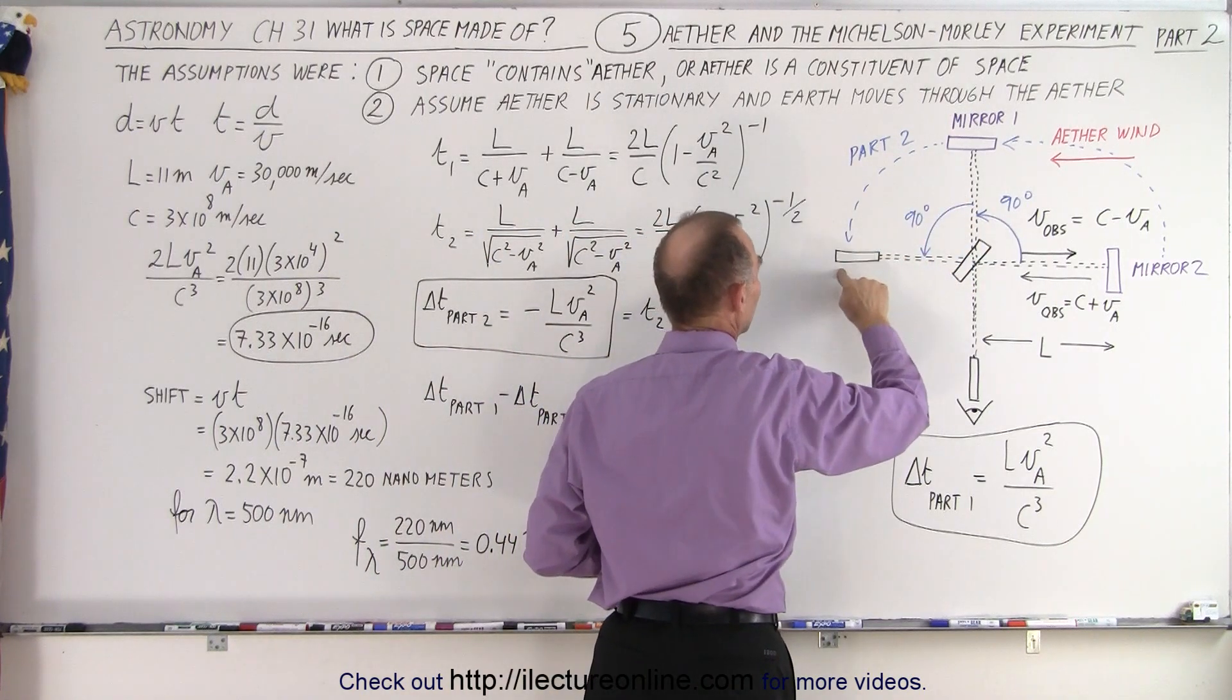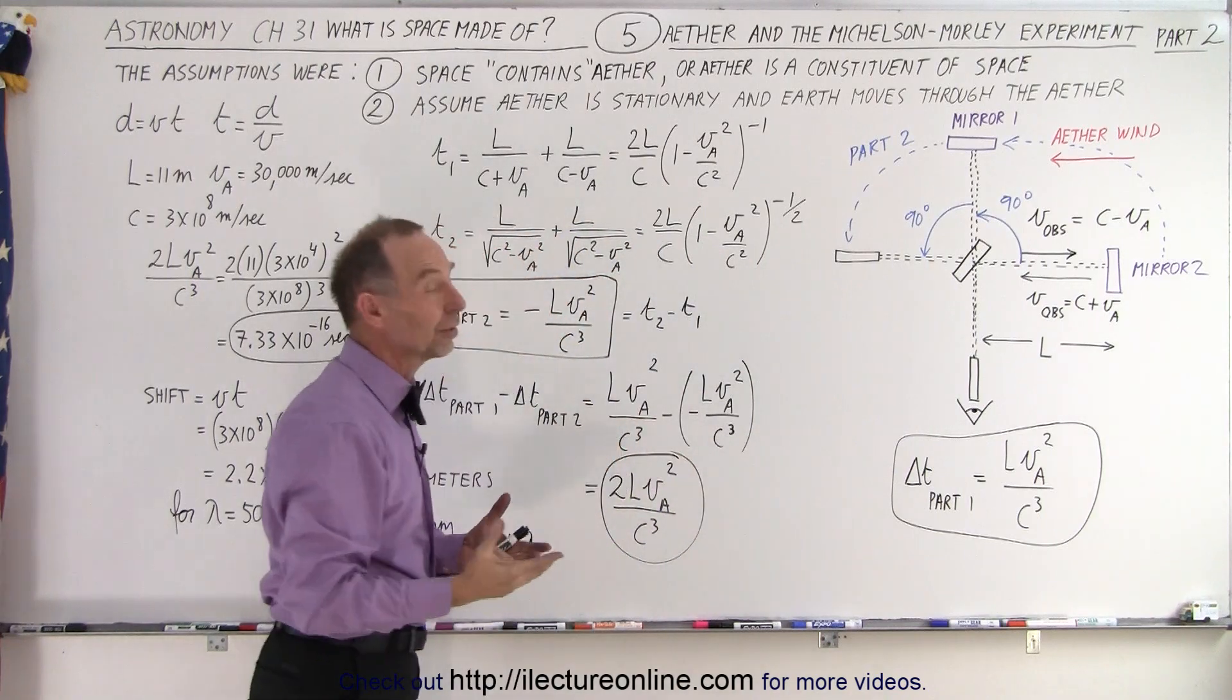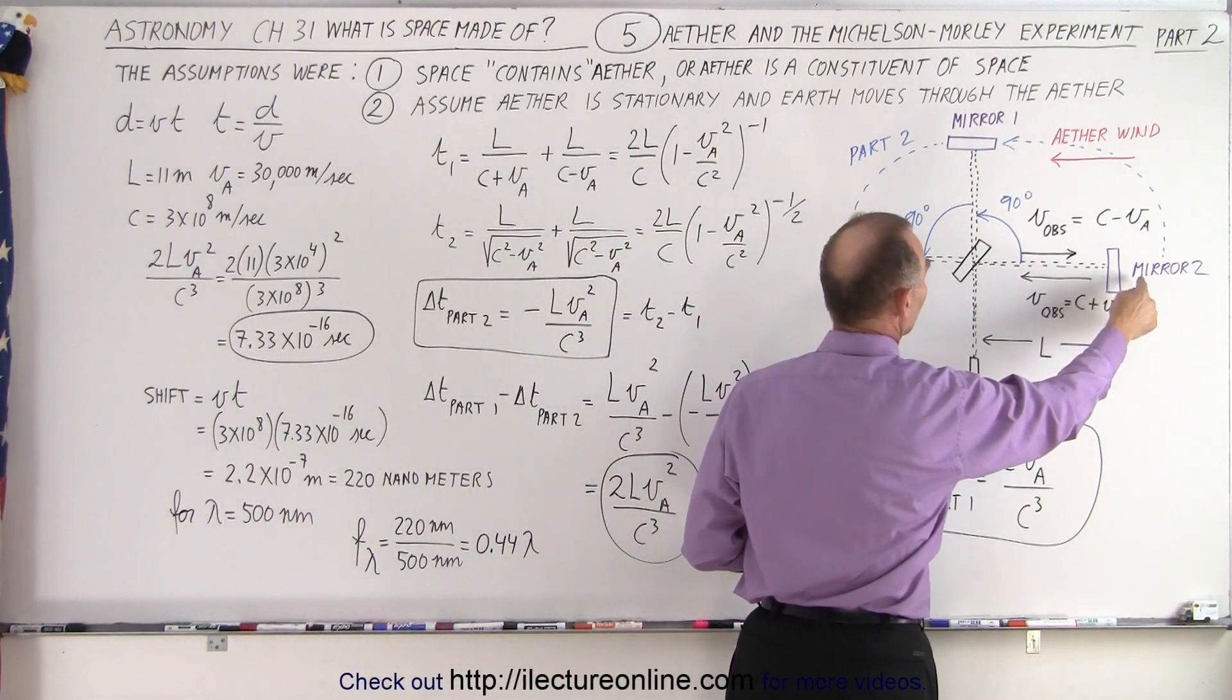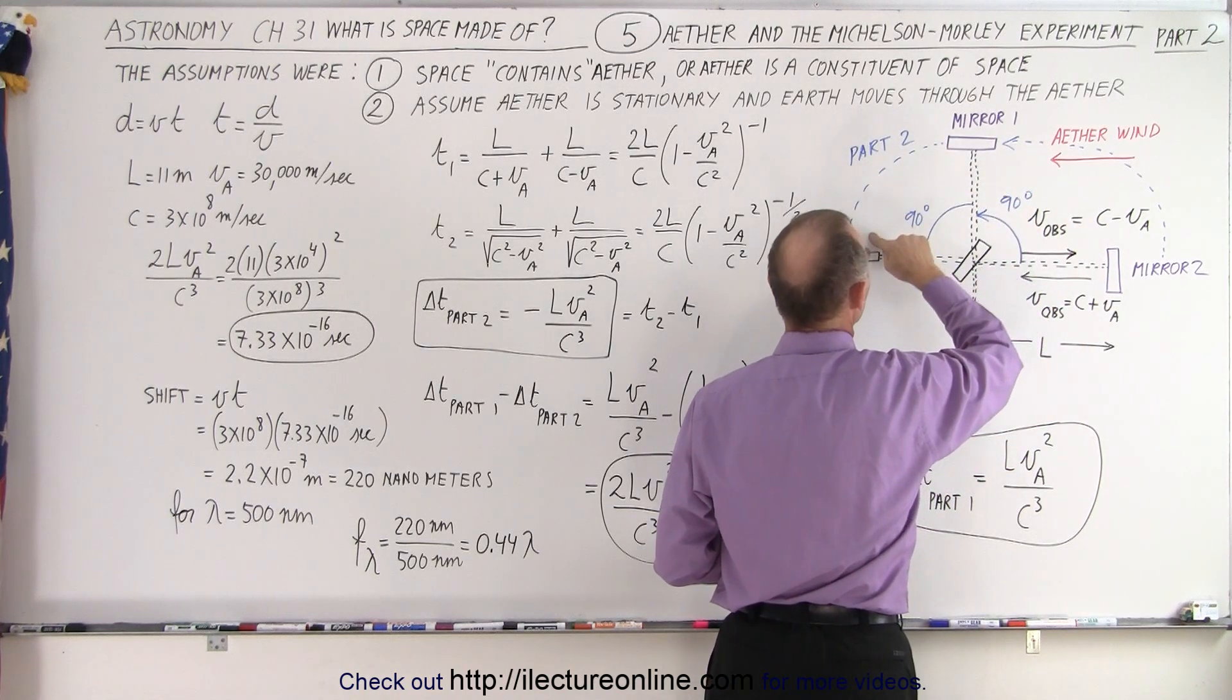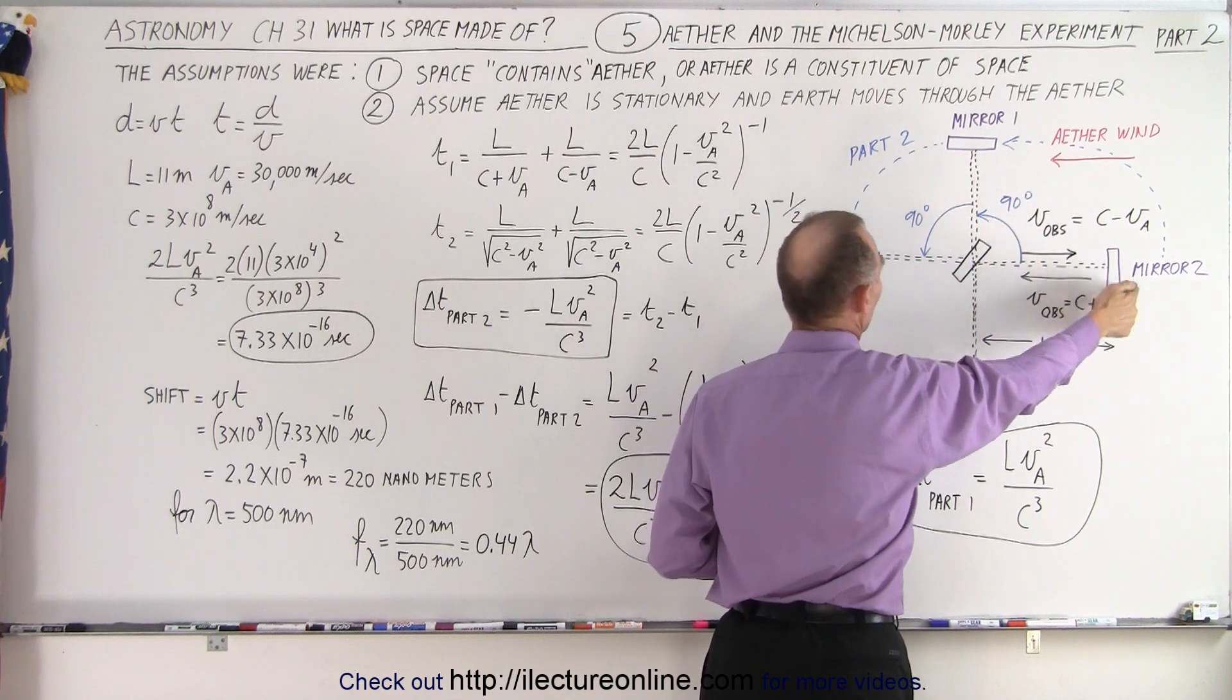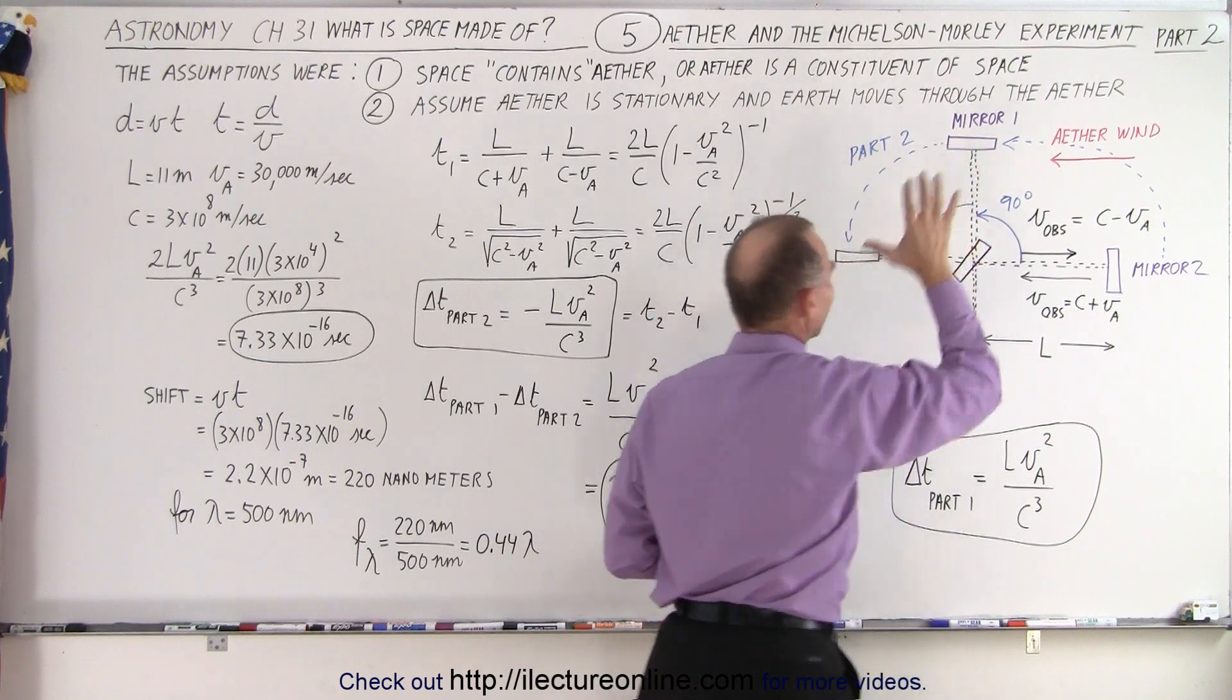Then what they did was they rotated the two mirrors, so mirror one came over here, mirror two went over there, and they did the same experiment. Now the difference is that the time was larger for this and smaller for here. Now the time will be smaller for here and larger for there.